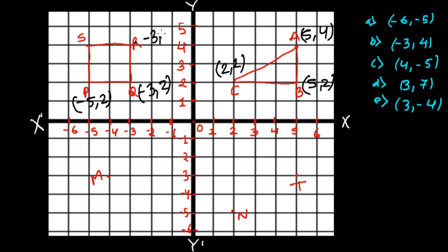For point R, along the x-axis it is minus three, and along the y-axis it is four — so R is minus three, four. For point S, the y-axis value is four, and the x-axis value is minus five, so by convention writing x first, S is minus five, four.